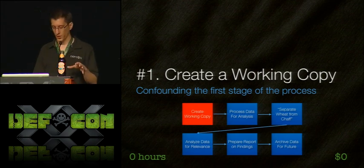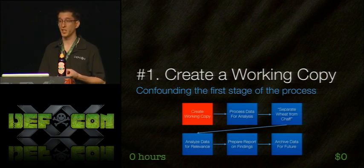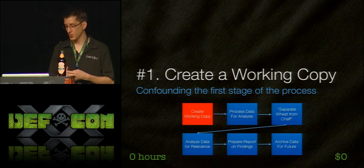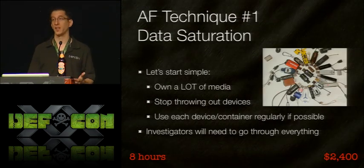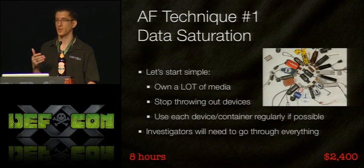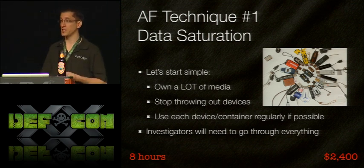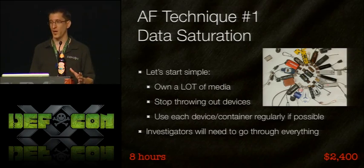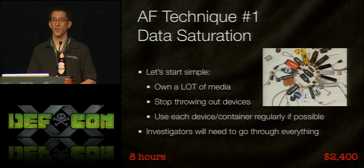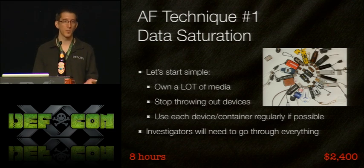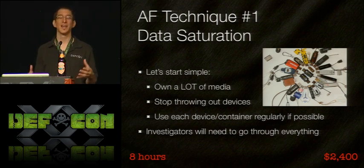The first stage is creating a working copy — copying the entire device via forensic imaging or creating a forensic container. The first technique is quite simple: just own a lot of media. As a suspect, keep every single piece of digital media you've ever had — every cell phone, USB key, burned CD and DVD, every hard drive and laptop. As a bonus, if you use these frequently, the investigator won't know which device holds the data he's looking for, so he'll have to look through everything, adding about eight hours to the investigation.